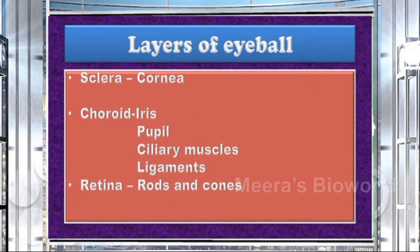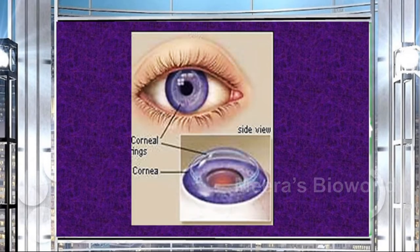The sclera is modified into another structure called the cornea. Similarly, the choroid gets modified into the iris, pupil, ciliary muscles, and ligaments. The retina comprises two photoreceptors: rods and cones. One modification of the sclera is the cornea — the projected, transparent anterior part of the sclera. Its function is to refract light rays to focus on the retina. The conjunctiva covers the front part of the sclera but is absent in the area of the cornea.